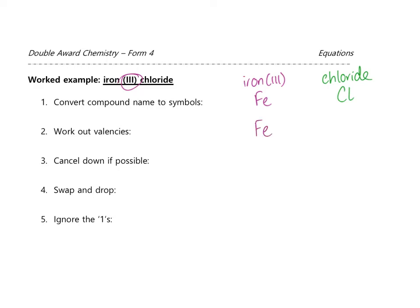Writing those in: Fe with valency three circled in the top right-hand corner, and Cl with valency one. Step three: cancel down if possible. The ratio is three to one — no, there is no simpler ratio. Step four: swap and drop. The valency of chlorine becomes the subscript on iron, giving Fe1, and the valency of iron drops to chlorine, giving Cl3. Step five: ignore the ones, and your final answer is FeCl3.